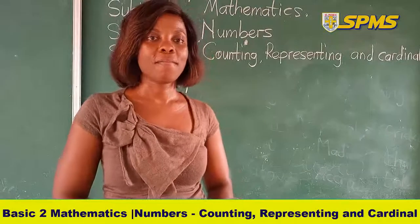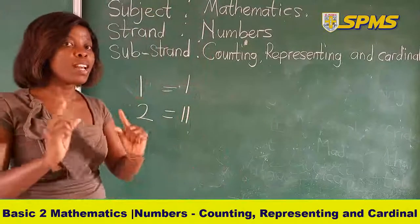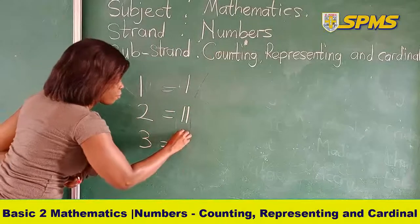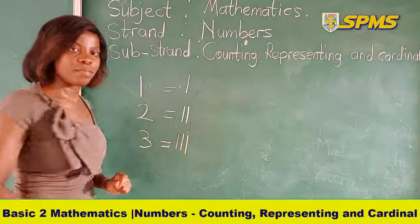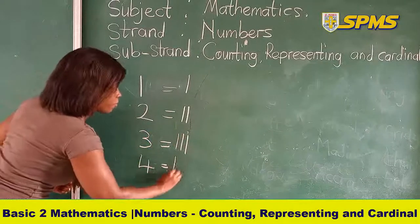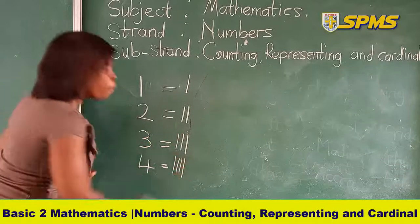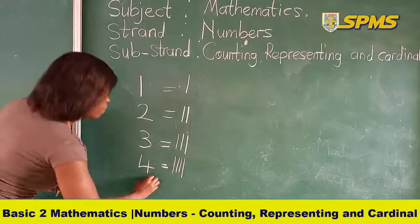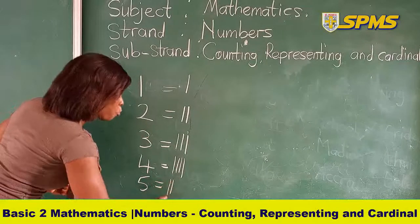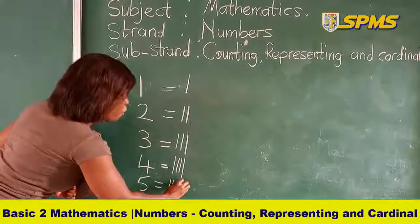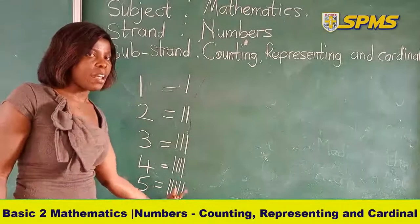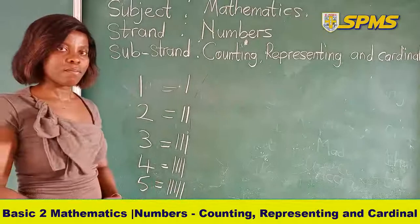What about 3? I am going to have 3 loose straws. 1, 2, 3, 4, 5. So I have 5 loose straws here representing the number 5.